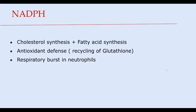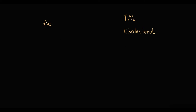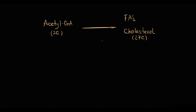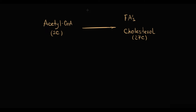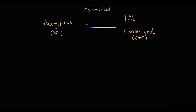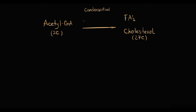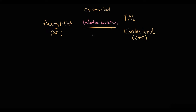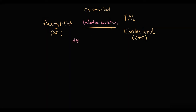NADPH has three major functions. First, NADPH molecules are required for cholesterol synthesis and synthesis of fatty acids. Both fatty acids and cholesterol are produced from multiple acetyl-CoA molecules. Acetyl-CoA has only two carbons, while cholesterol has 27 carbons. To make something large from something small, the organism must condense multiple small molecules into one big molecule. Condensation of multiple acetyl-CoA molecules into one big cholesterol molecule occurs through multiple reduction reactions, and the enzymes that carry out these reductions use NADPH molecules as an electron donor.